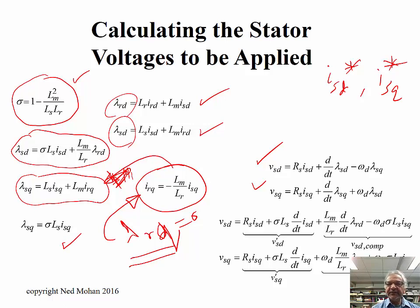Again, using these into these two equations, we come up with these equations over here, where terms have been collected such that this VSD prime only contains quantities corresponding to D channel here. So VSD in terms of ISD and d/dt of ISD, and the other things, of course, you still have lambda RD, but that is not changing very fast, maybe not changing at all. So this d/dt term is very small, and then we have ISQ coming from the other channel. We will lump them and call them VSD compensation. And similarly, we do this for VSQ.